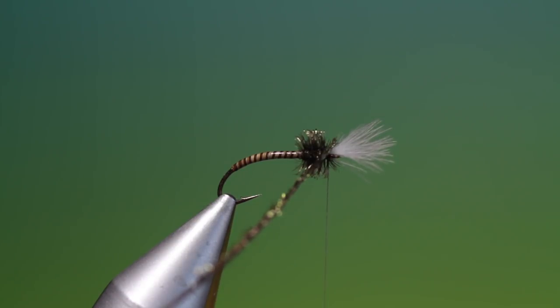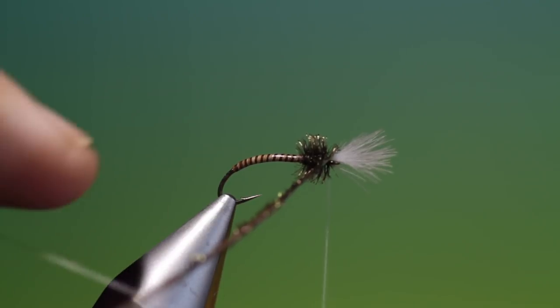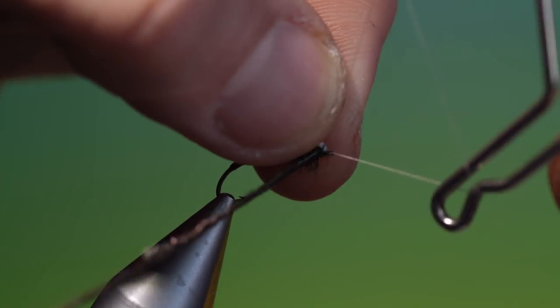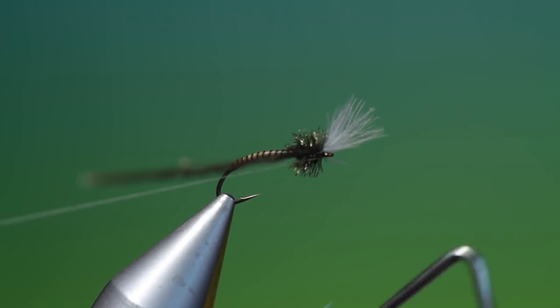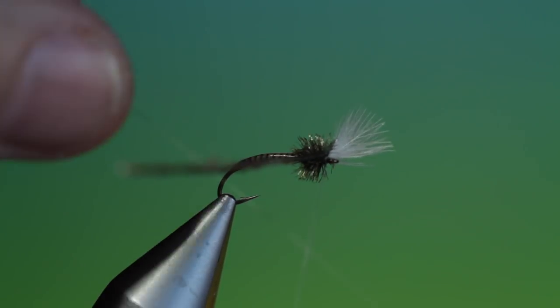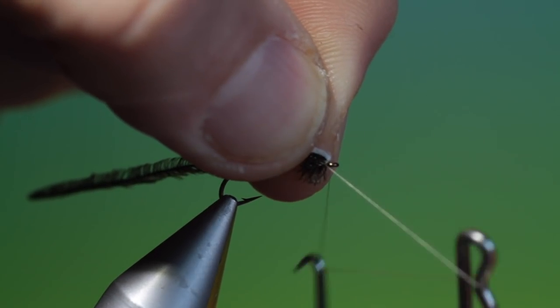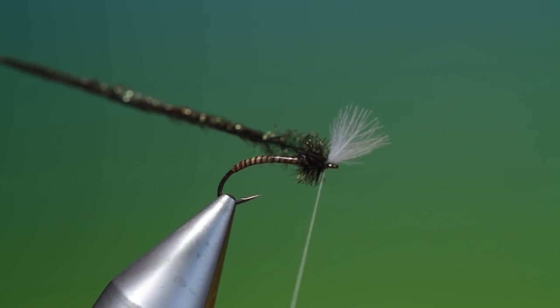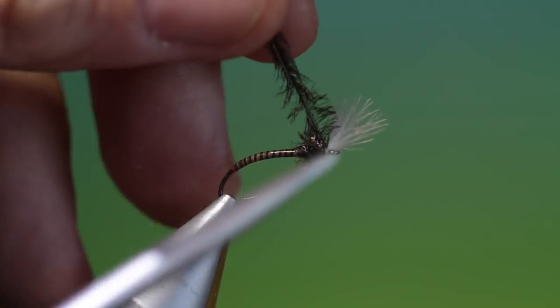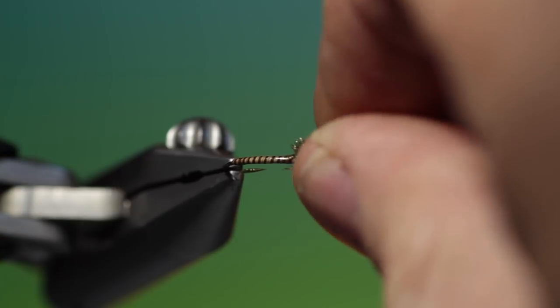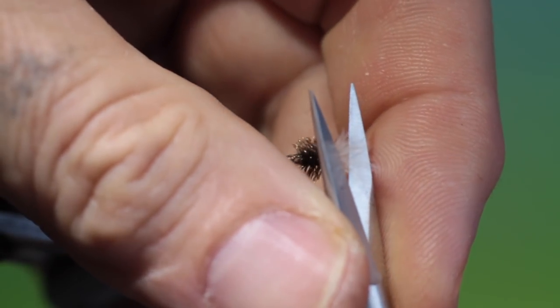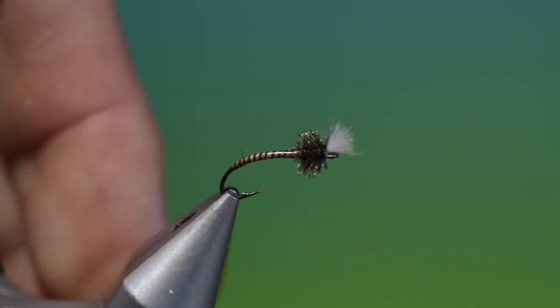We can take the hackle plier off. Finish. Get that CDC out of the way. Remove that. And then what we want to do is just pull all that CDC around the front and trim that off. And that's it.